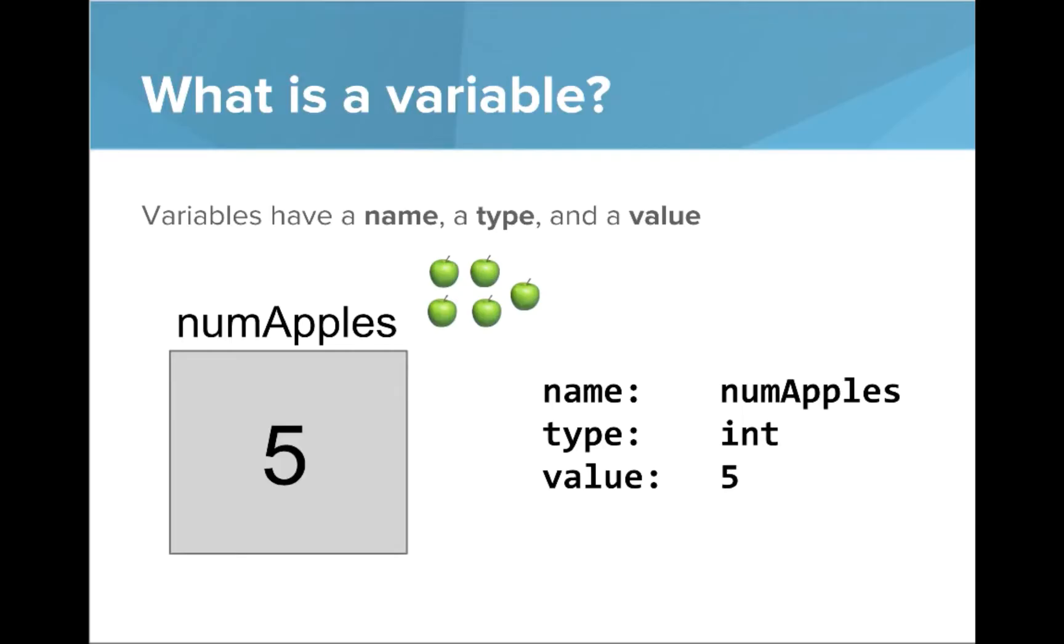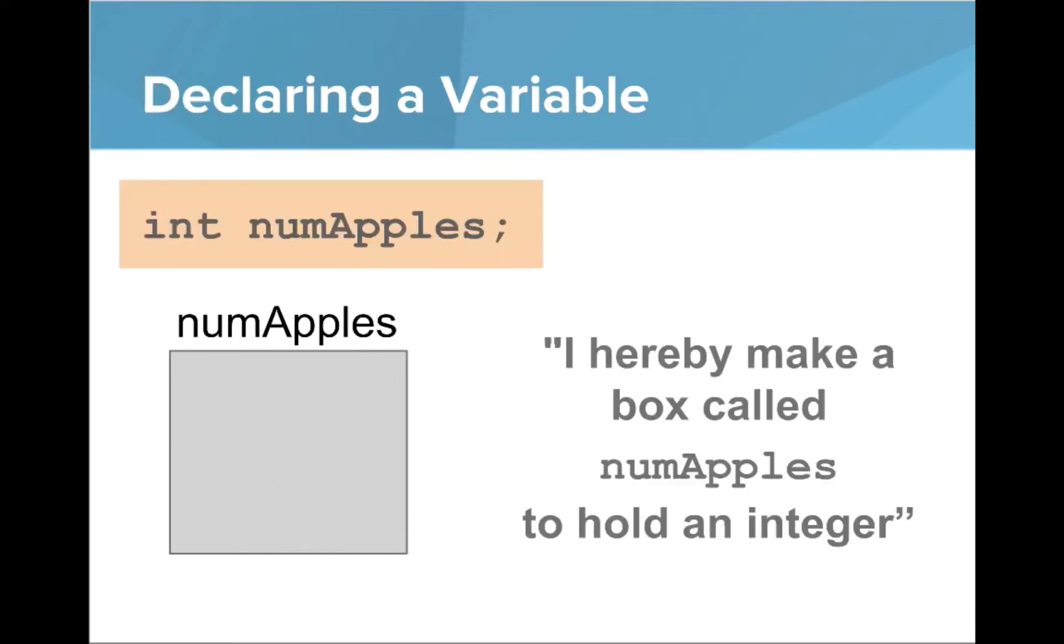In this example, the name is numApples, the type is int for integer, and the value is 5. There's five apples. There's a few important things we can do with variables, and one of them is declaring a variable. This code here, int numApples semicolon, declares the variable numApples. What that really means is you're saying I hereby make a box called numApples to hold an integer. It's important that in Java you say the type of the variable when you declare it.